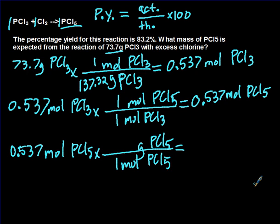And when you do this calculation, it comes out to 111.8. This is in grams of PCl5.